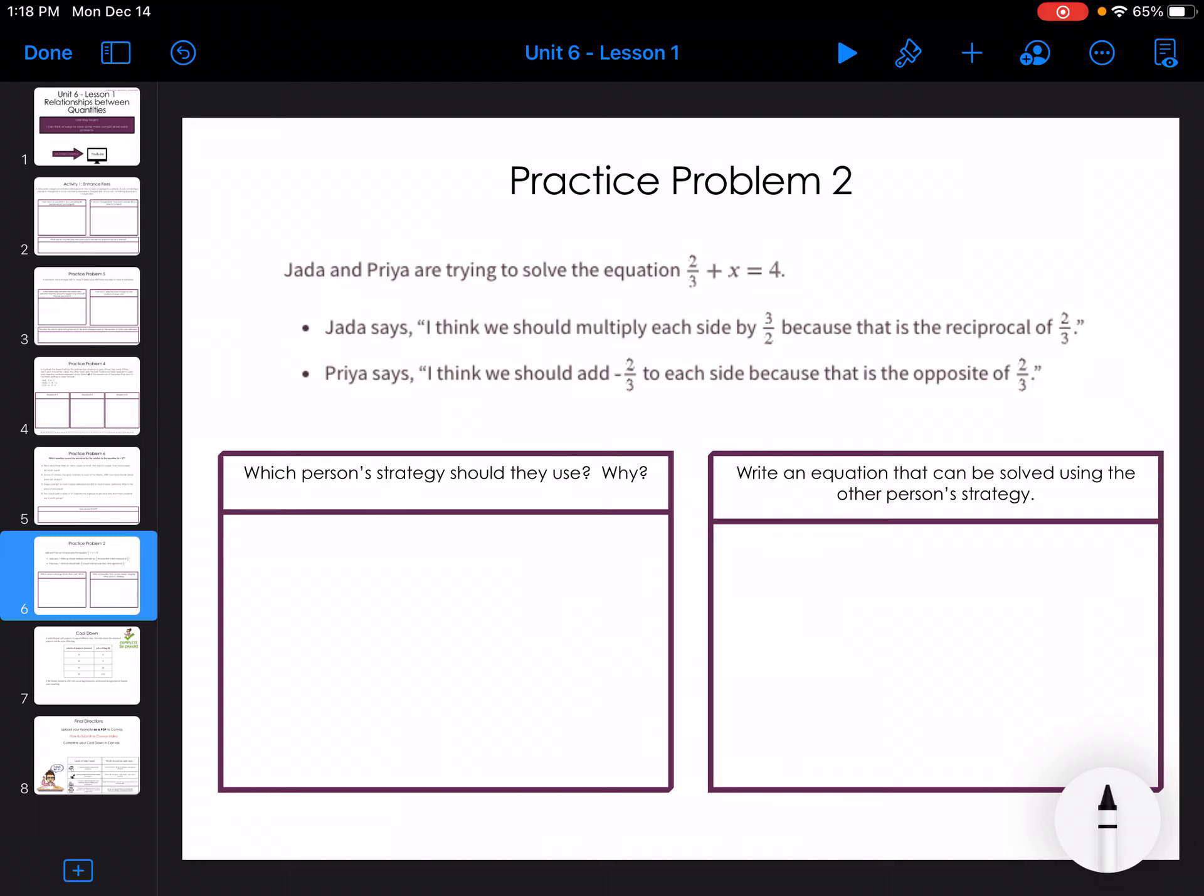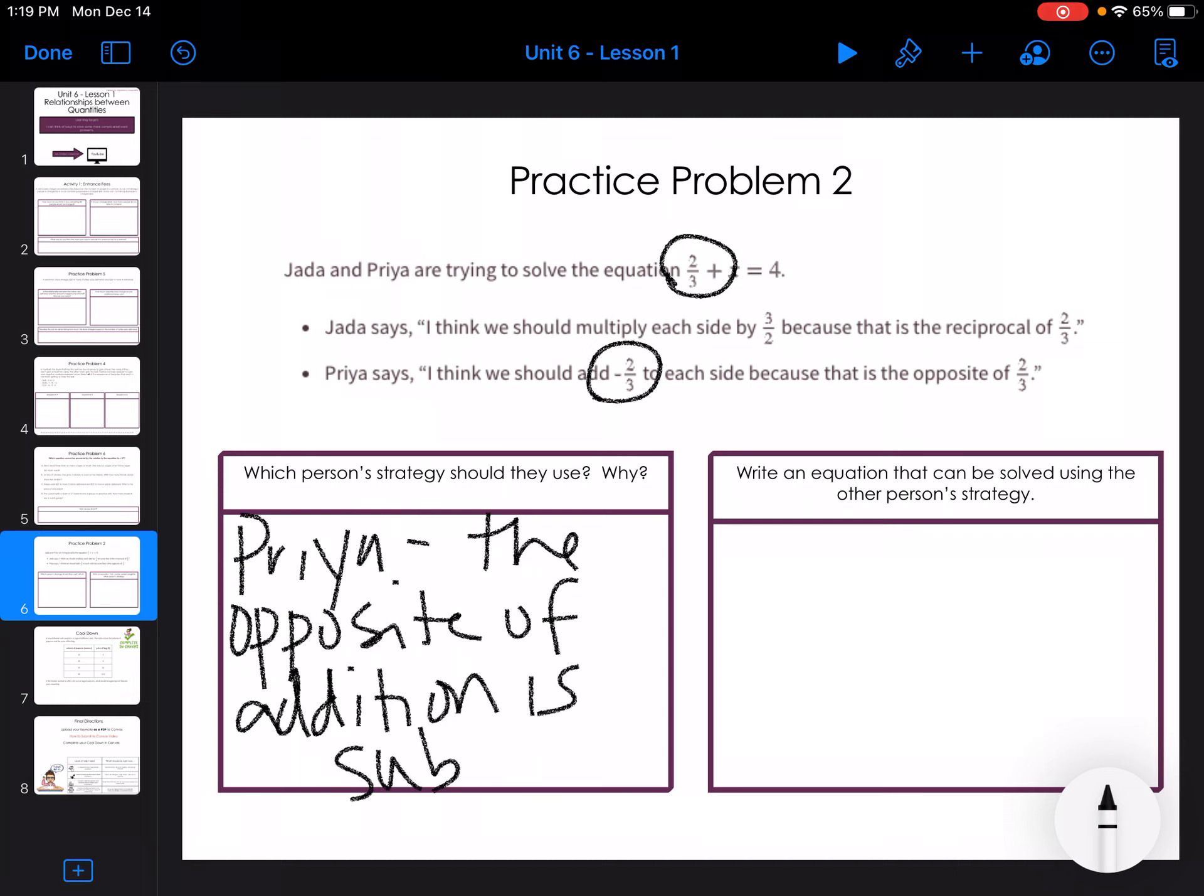All right. So the last one, it says Jada and Priya are trying to solve an equation, 2/3 plus x equals 4/3. Jada thinks that they should multiply each side by 3/2, because that's the reciprocal of 2/3. Priya says that they should add negative 2/3 to each side because that's the opposite of 2/3. Which person's strategy should they use and why? Well, if I'm adding, the opposite of addition would be subtraction or using the opposite. So we're going to use Priya's strategy. The opposite of addition is subtraction. So write an equation that can be solved using the other person's strategy. That would be 2/3x equals 4, because you're using multiplication. To undo that, you would use the reciprocal or divide.